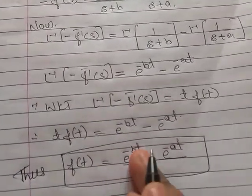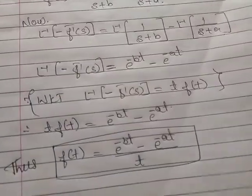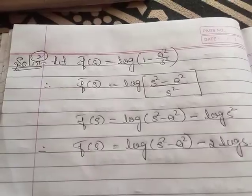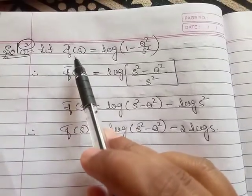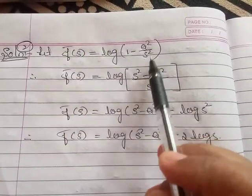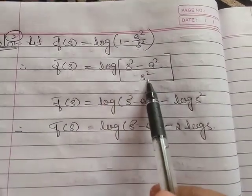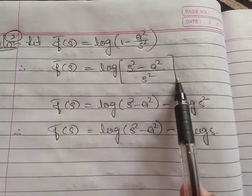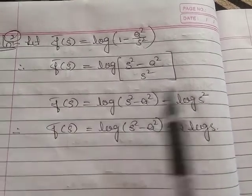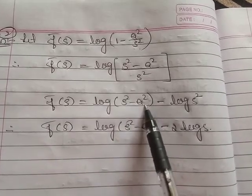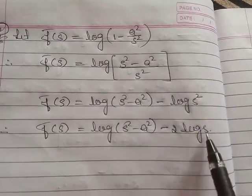Thus f(t) = (e^(-bt) - e^(-at))/t is the required answer. Now, solution for the second example: given F̄(s) = log(1 - s²/s²) which can be written as log((s² - a²)/s²). Using logarithmic properties: F̄(s) = log(s² - a²) - log(s²) = log(s² - a²) - 2·log(s).